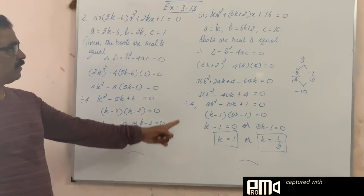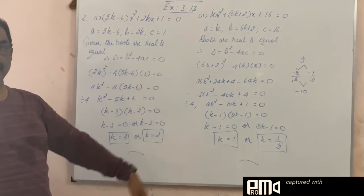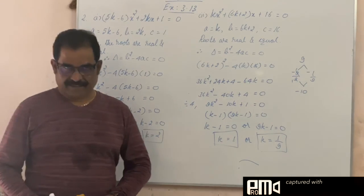Hope you can follow this. Systematically, all the values you substitute in the factorization get the values of k. Thank you.